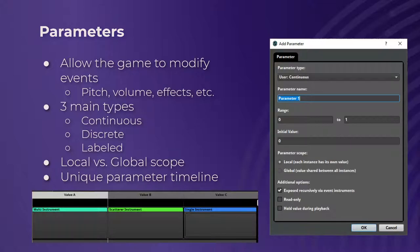Under value A I have one multi-instrument, value B I have a scatterer, and value C I have a single instrument. Just replace those with a multi-instrument for footsteps on grass, a multi-instrument for footsteps on metal, whatever surface you're on. This is super useful — definitely take advantage of this.